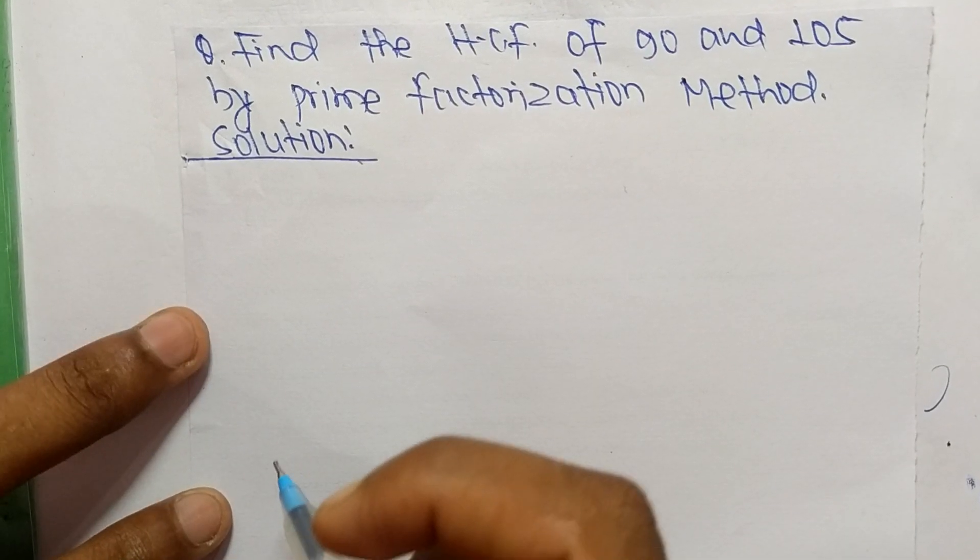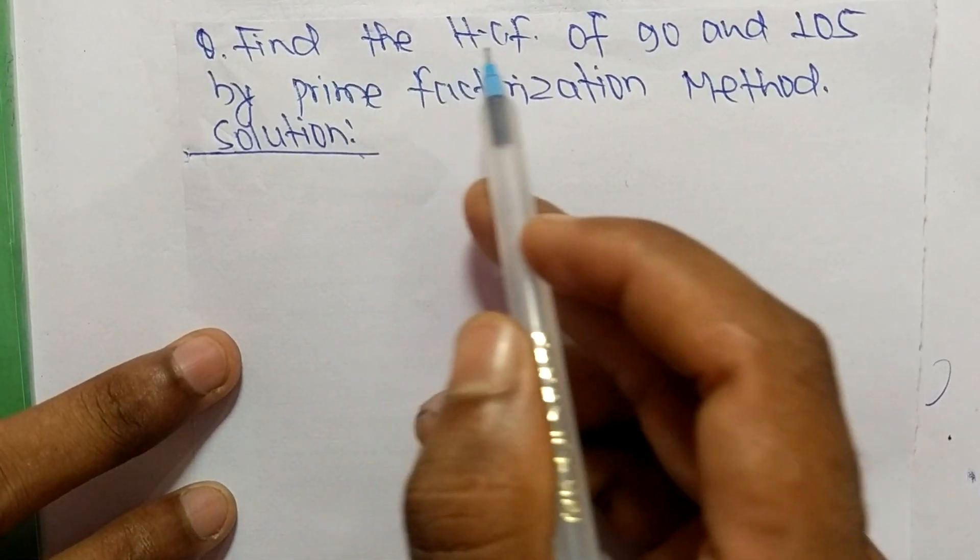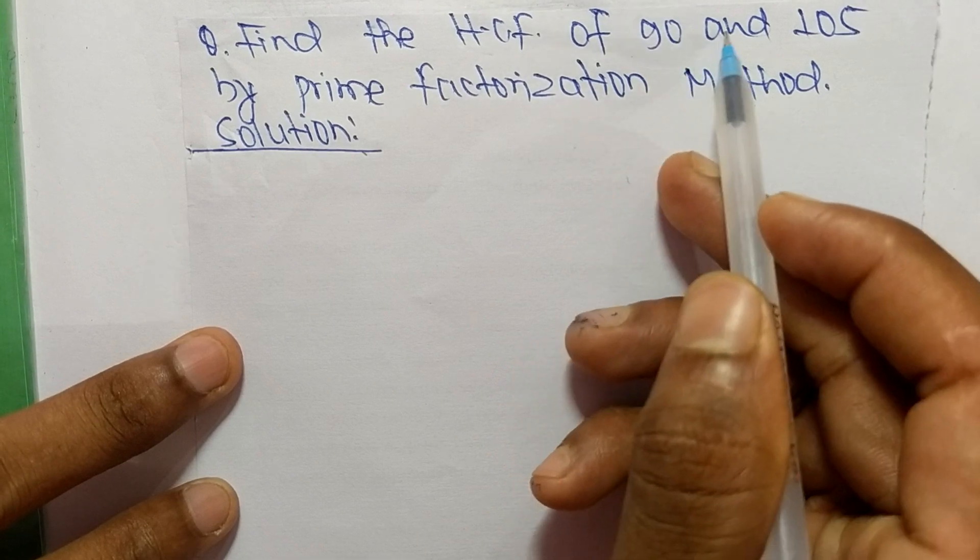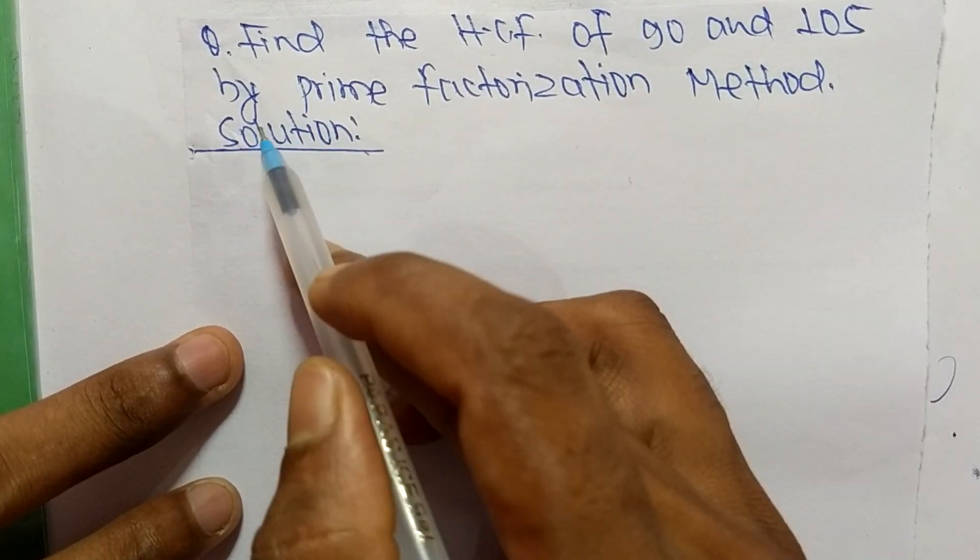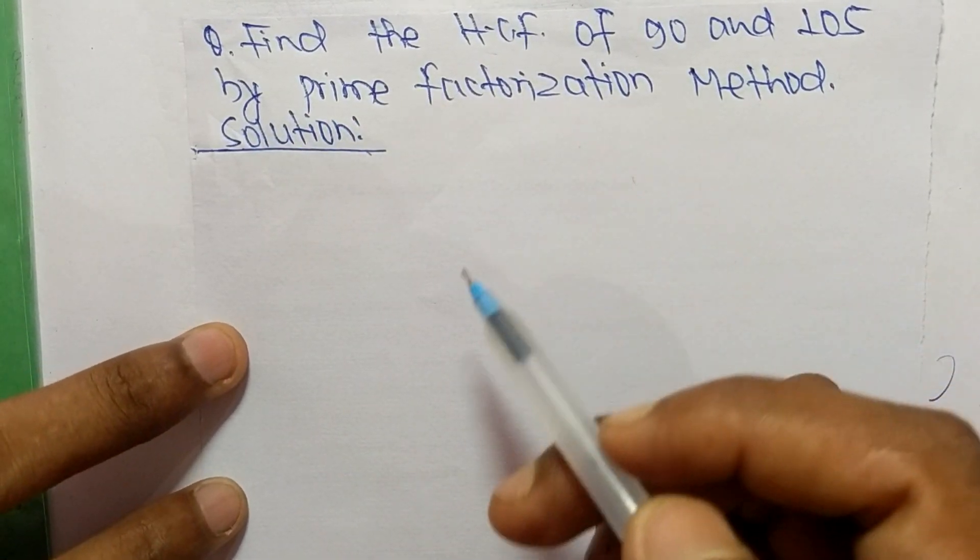So today in this video we shall learn to find the HCF of 90 and 105 by prime factorization method.